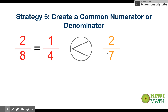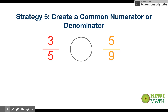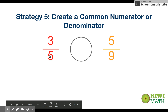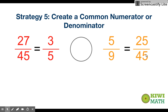Two-eighths is less than two-sevenths because sevenths are bigger pieces than eighths. Now let's look at another example: three-fifths and five-ninths. We can't use any other strategy — they're both greater than a half, so benchmarks won't help. We'll create a common denominator. The lowest common denominator of five and nine is 45. Three-fifths becomes twenty-seven forty-fifths (3×9=27, 5×9=45), and five-ninths becomes twenty-five forty-fifths (5×5=25, 9×5=45). Since 27 > 25, three-fifths is greater than five-ninths.